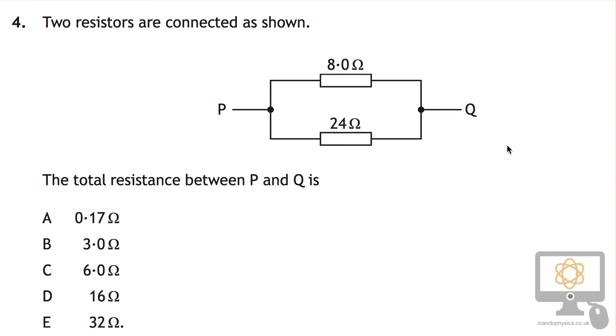So question 4 from the 2016 National 5 Physics paper is all about two resistors and they are connected in parallel. That's the most important thing to note here.